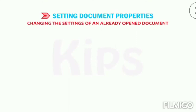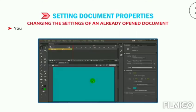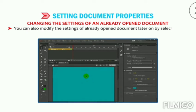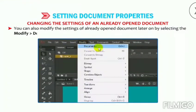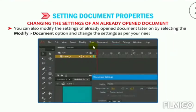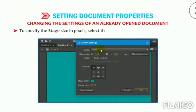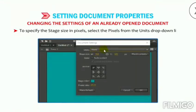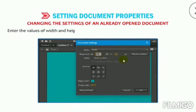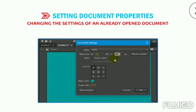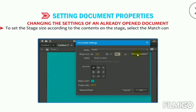To modify the settings of an already open document, select Modify then go to Document option and change the settings as needed. To specify the stage size in pixels, select Pixels from the Units drop-down list and enter the width and height values. To set the stage size according to the contents on the stage, select the Match Contents option next to the Stage Size section.